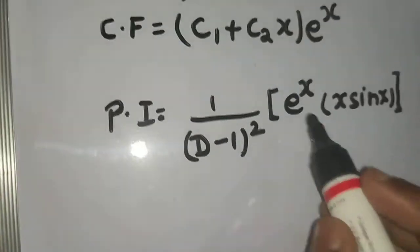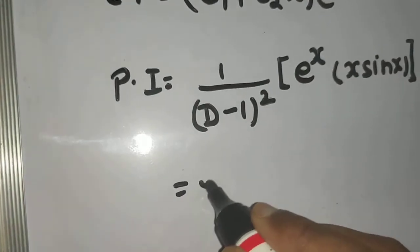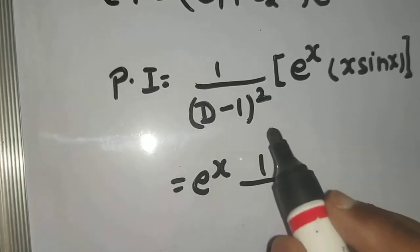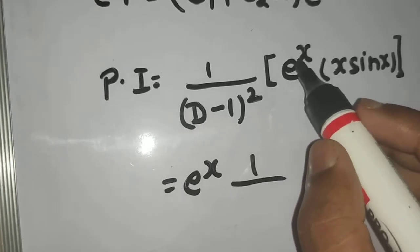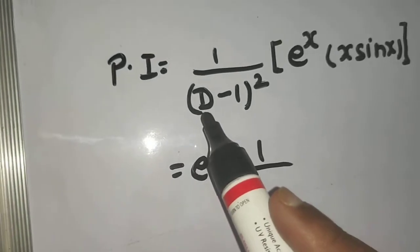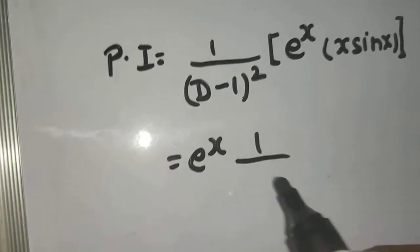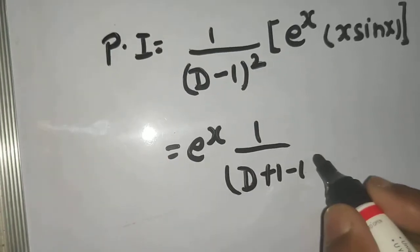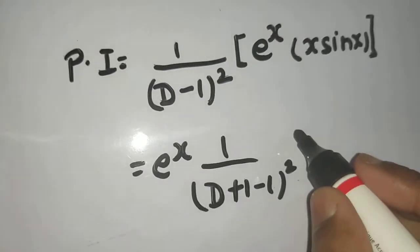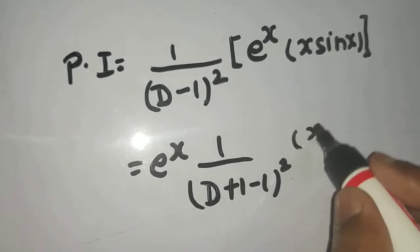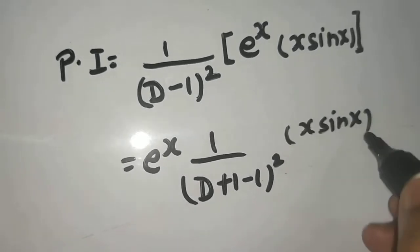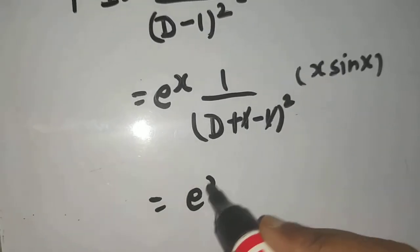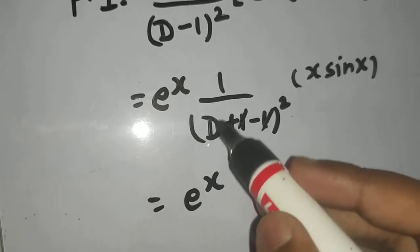Using the e^(ax)·v rule: bring eˣ out and replace D by (D + a), where a = 1. So D becomes (D + 1), giving 1/(D+1-1)² = 1/D². The 1s cancel, leaving eˣ·(1/D²) operating on x sin x.